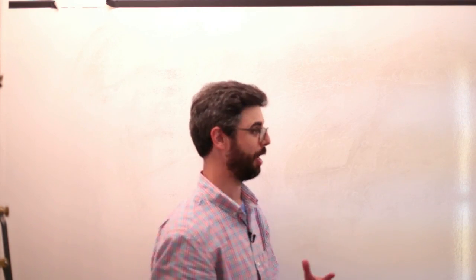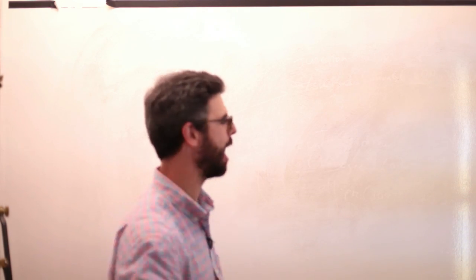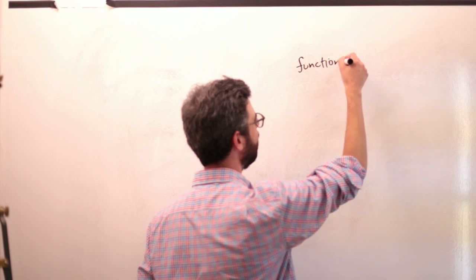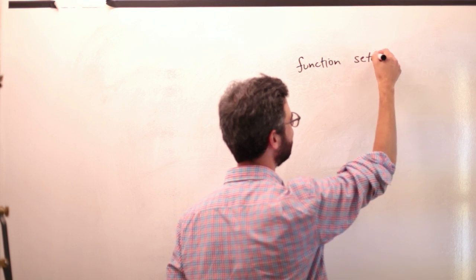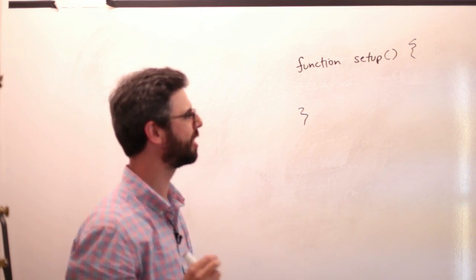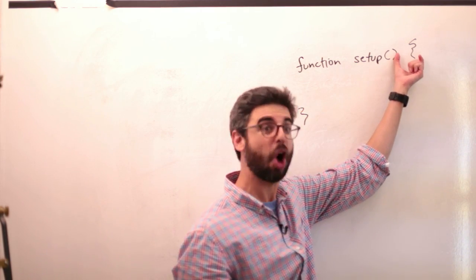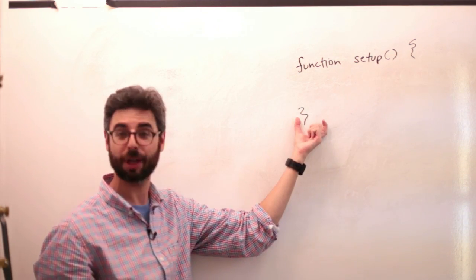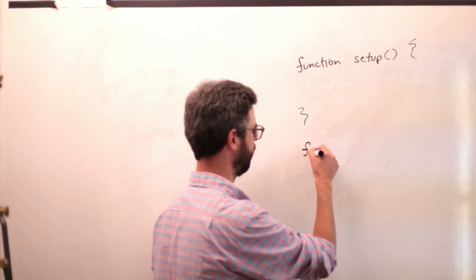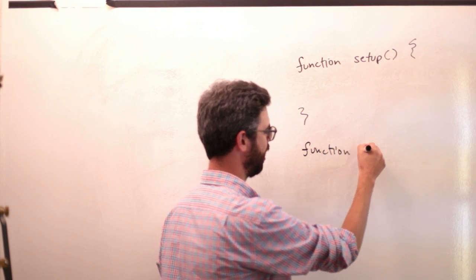In the previous video I showed you how to draw a static thing to the screen. You could make a rectangle, a circle, color it. And in order to do that, we had to add two things — blocks of code, I'll call them. A block of code is something that begins with an open curly bracket and ends with a closed curly bracket.